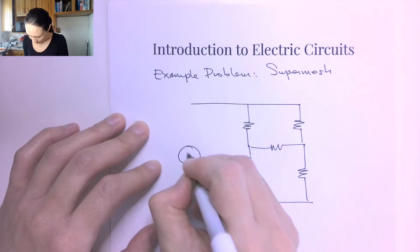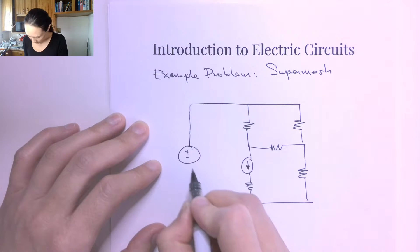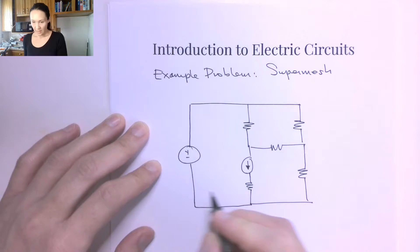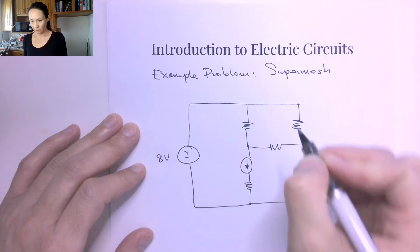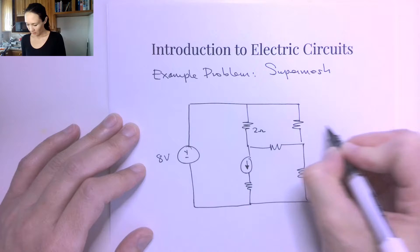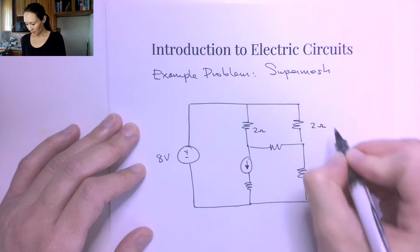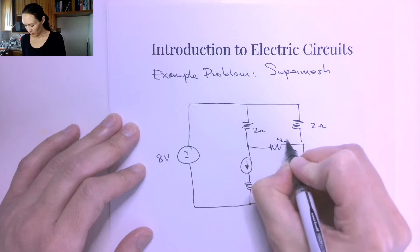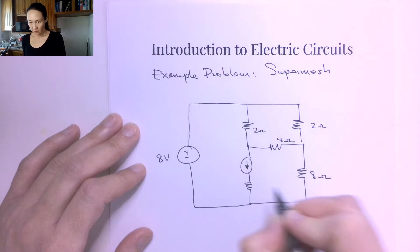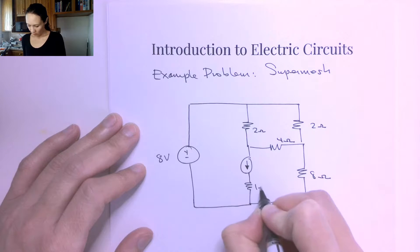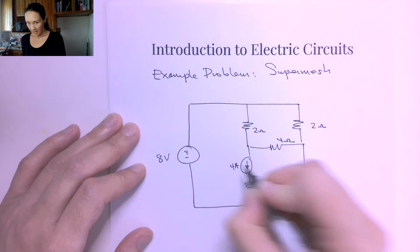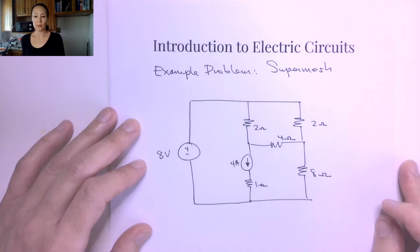I'm going to put a voltage source over here — let's let this be 8 volts. Here's a 2-ohm resistor, here's another 2-ohm resistor, here's a 4-ohm resistor, here's an 8-ohm resistor, this is a 1-ohm resistor, and this is a 4-amp current source.